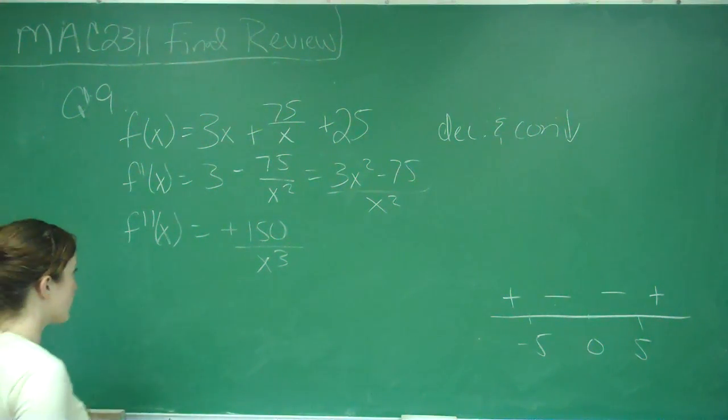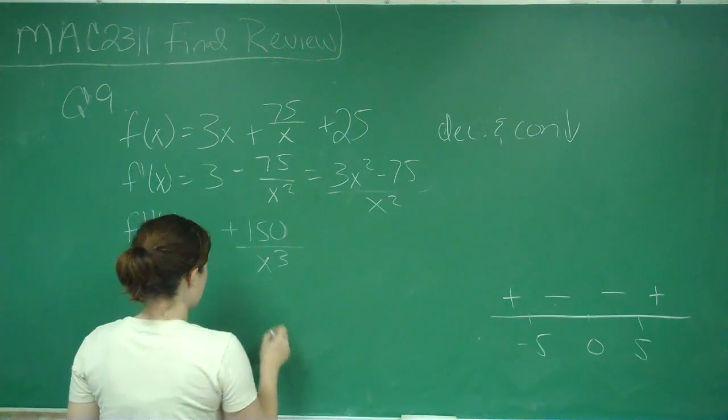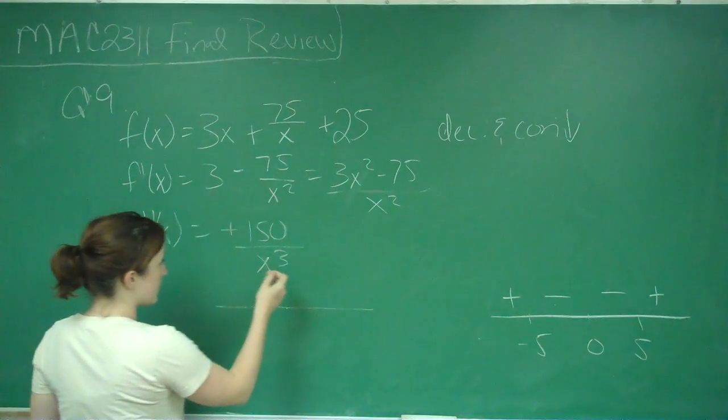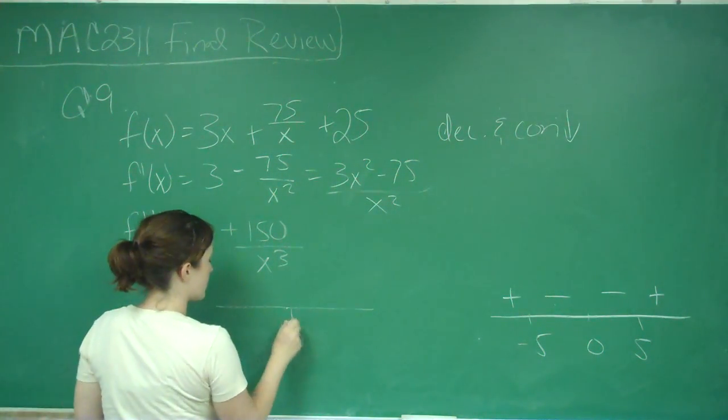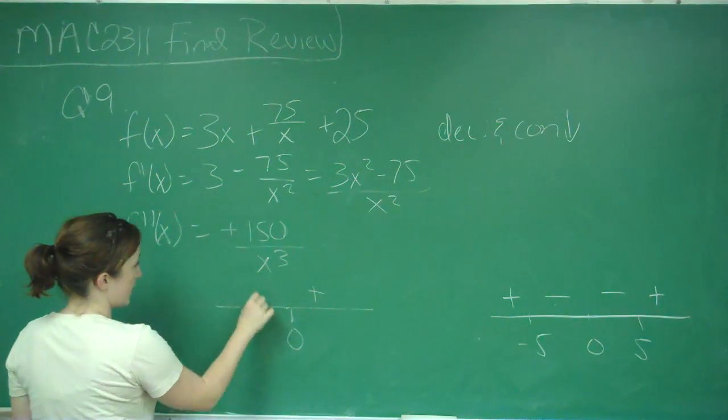So again, here for our x cubed, we test points on either side. We'll set it equal to 0, and we just get 0. If I plug in 1, I get a positive, and if I plug in negative 1, I get a negative.